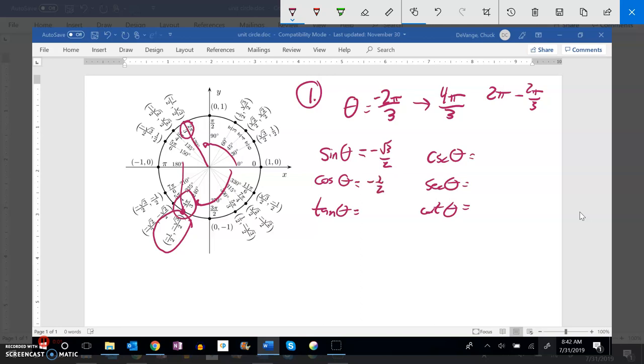And as I keep going from there, tangent is y over x. So that would be negative root 3 over 2 over negative 1 half. And you can notice that the negatives will divide out and the 1 halfs will divide out. So that just leaves me a square root of 3.